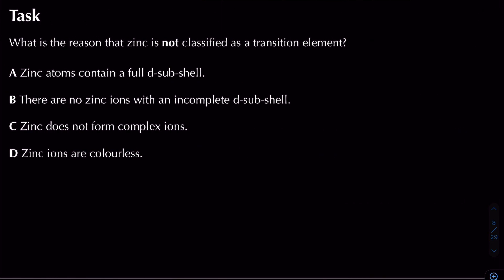Practice question: why is zinc not classified as a transition element? A — zinc atoms contain a full d subshell — is false because we look at ions, not atoms. B — there are no zinc ions with an incomplete d subshell — is true, because zinc only forms Zn2+ which has a full d subshell. The answer is B.